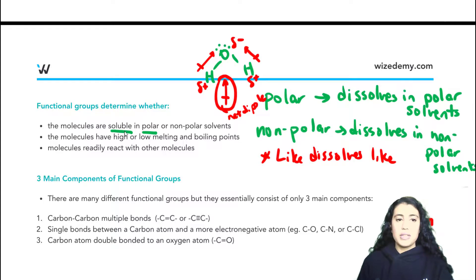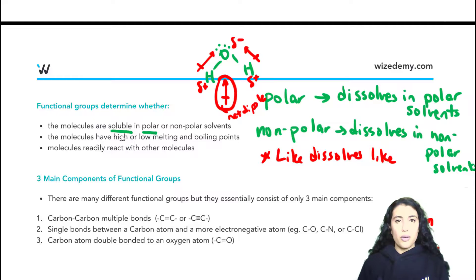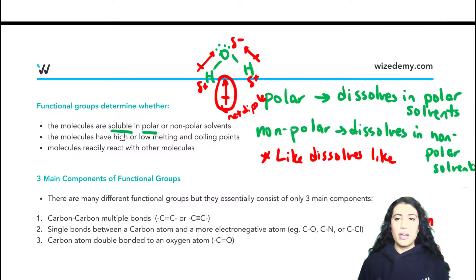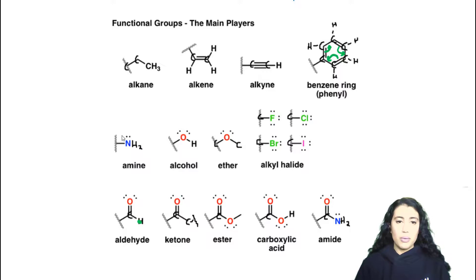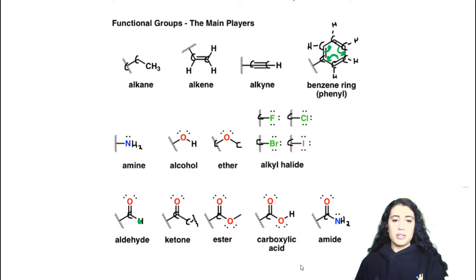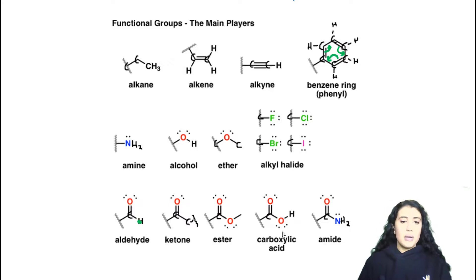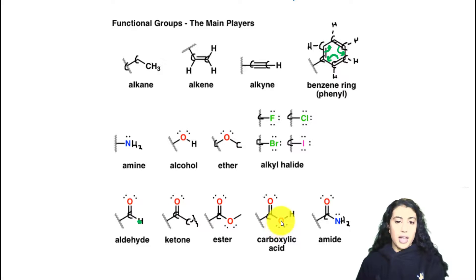The other thing we can learn from functional groups is about melting points and boiling points. Based on the functional groups and the overall molecule, we can make educated guesses — if we compare two functional groups we can know if one would have a higher or lower melting or boiling point. The trend is similar to polarity.